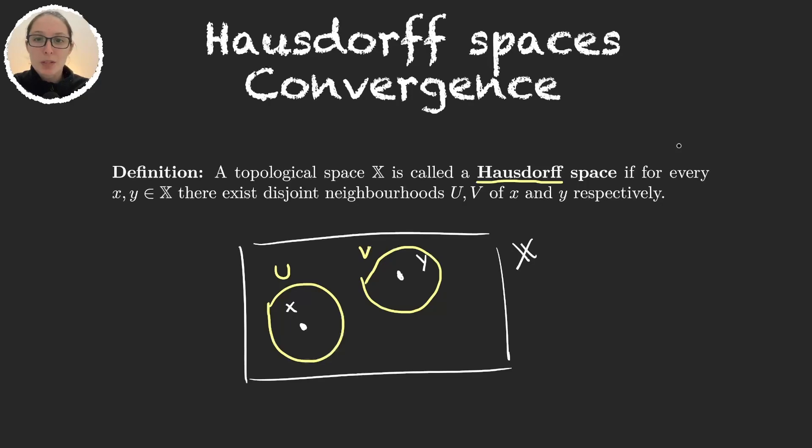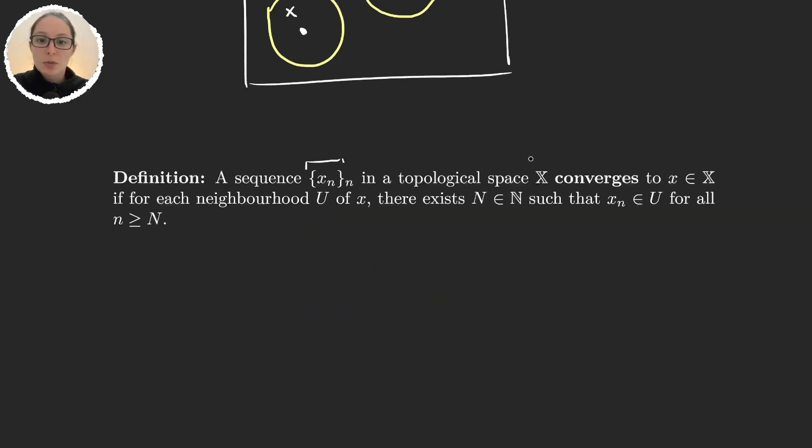So let's define the convergence and then see why this could be a problem. We have a sequence in the topological space X and we say that this sequence converges to a point in the space if for each neighborhood U of the point that we want to call the limit point there exists a natural number such that there are an infinite amount of elements in the sequence in that open neighborhood. So again if this is our space.